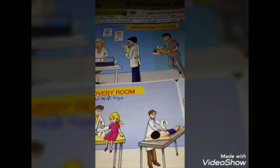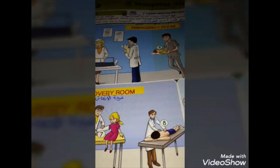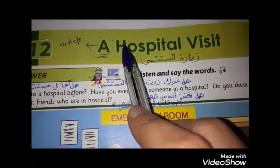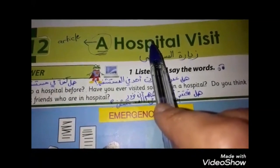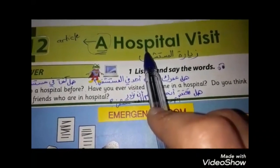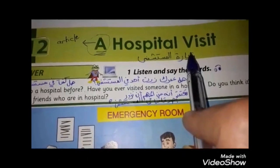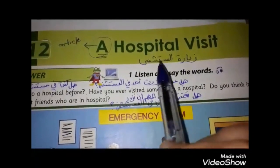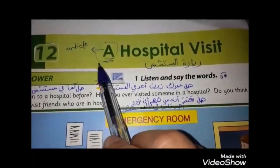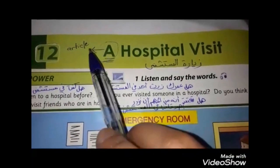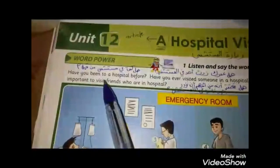Hello, dear students. Today we're going to start with Unit 12, so open your student book at page 104. The title of our unit is 'A Hospital Visit.' This unit will basically talk about hospitals. In Arabic, hospital means 'mustashfa' and visit means 'ziyara,' so 'a hospital visit' means 'ziyarat mustashfa.' Note that 'a' here is always considered an article.